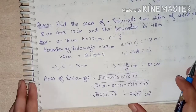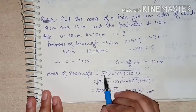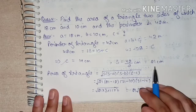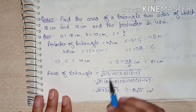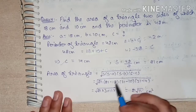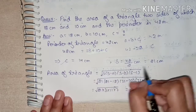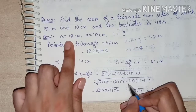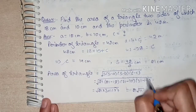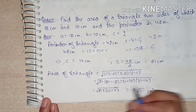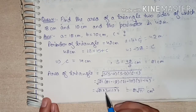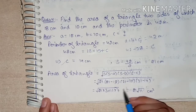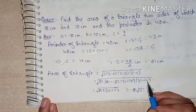Now for the area: Area = √(s·(s−a)·(s−b)·(s−c)). Substituting values: s = 21, s−a = 21−18 = 3, s−b = 21−10 = 11, s−c = 21−14 = 7. So Area = √(21 × 3 × 11 × 7).